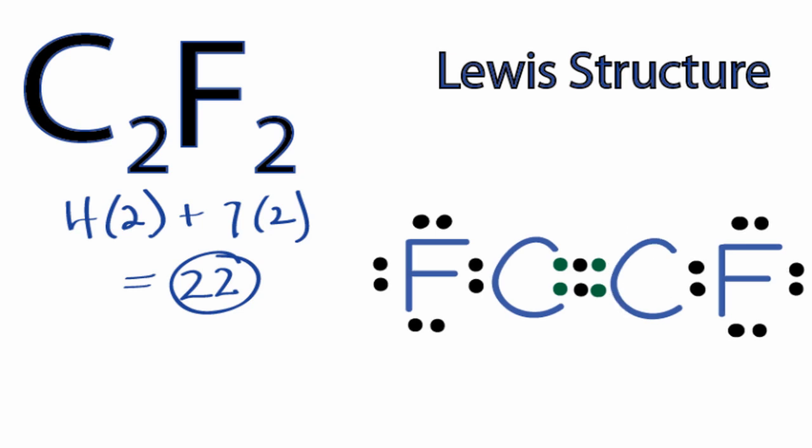Now, the carbon on the left has eight valence electrons, and the carbon on the right has eight valence electrons, and we're still only using the 22 valence electrons we have. So this is the Lewis structure for C2F2, and this is Dr. B. Thanks for watching.